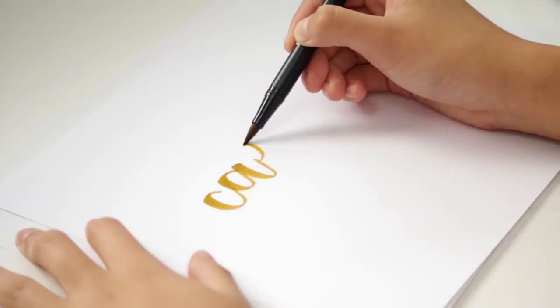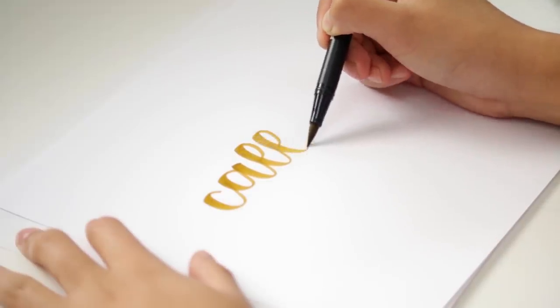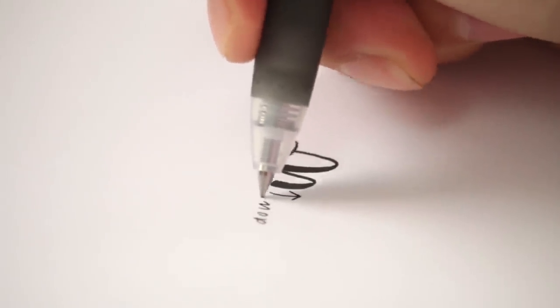First of all, a downstroke is the part of the letter that is generally thicker or darker in calligraphy, and these are the parts of the letter where you press down and pull the pen towards your body.